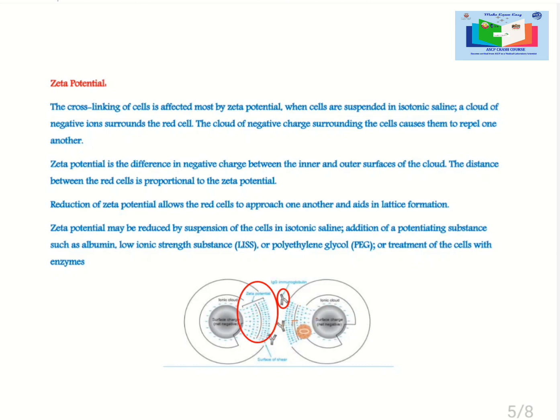Enhancement medias such as low ionic strength solution, bovine albumin or polyethylene glycol can reduce the zeta potential and may allow antibody uptake and provide suitable environment for lattice formation. This is a lattice formation where multiple antibodies attach to multiple sites on different red blood cells. This RBC lattice formation results in clumping and visible agglutination.